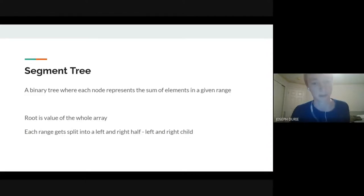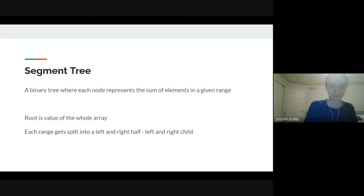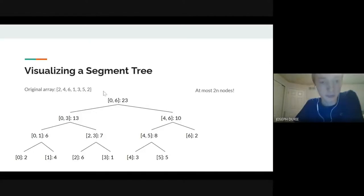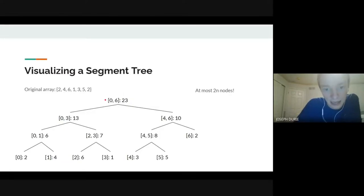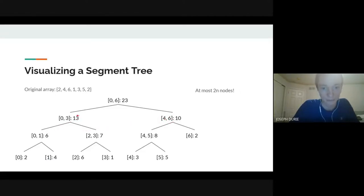The idea of a segment tree is it's a binary tree where every node represents the sum of elements in a given range. The root represents the whole array. From there, you recursively keep splitting it in half. For example, with array [2, 4, 6, 1, 3, 5, 2], the root stores the sum of everything — 23 — and then we split into range 0–3 and range 4–6.